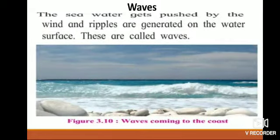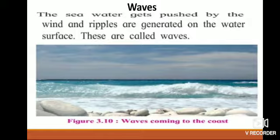Waves: seawater gets pushed by the wind and ripples are generated on the water surface — these are called waves. The seawater moves up and down or slightly forward and backward due to the waves. The waves bring the energy contained in them to the coast.